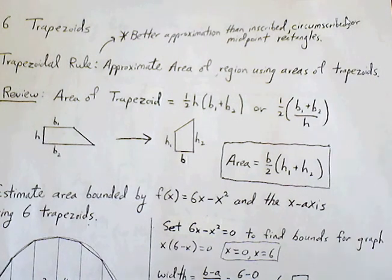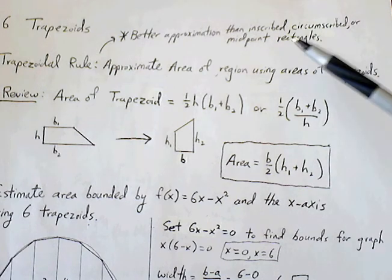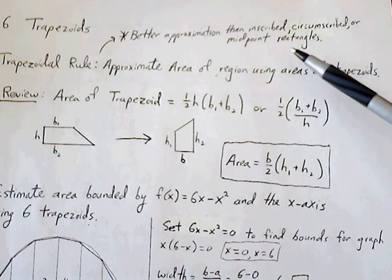I'm going to see this a little bit visually, but this is actually going to give us, using trapezoids, we can approximate the area of a region better than inscribed, circumscribed, or midpoint rectangles.